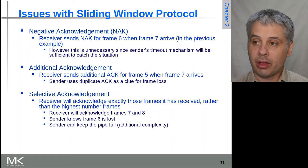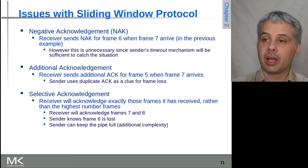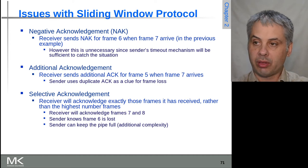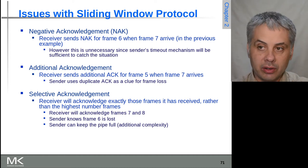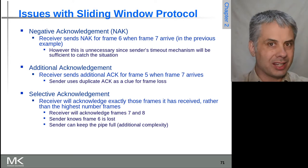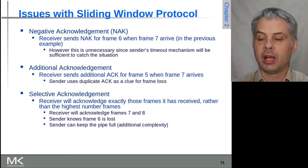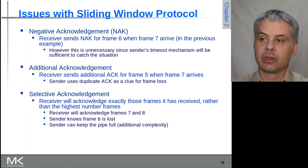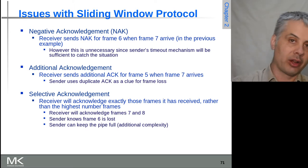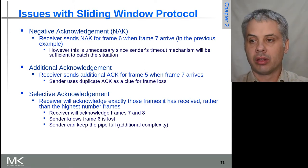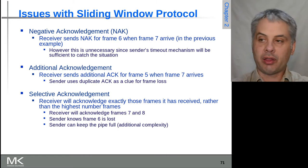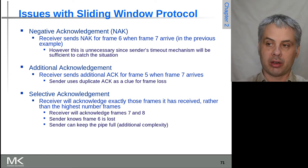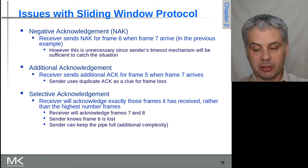Looking at the example we had previously, as soon as the receiver receives frame 7 after having received frame 5, it knows it didn't get frame 6 in order, so it can send a negative ACK for frame 6. The sender will then realize it needs to resend frame 6. But in many cases this is not necessary, because the timeout mechanism on the sender will probably be enough to catch that particular situation.